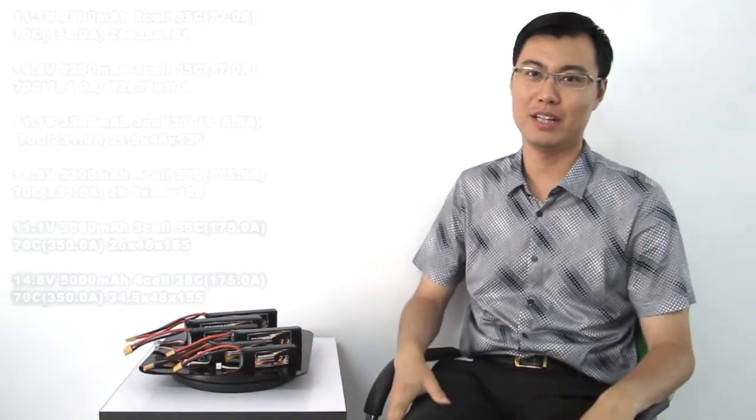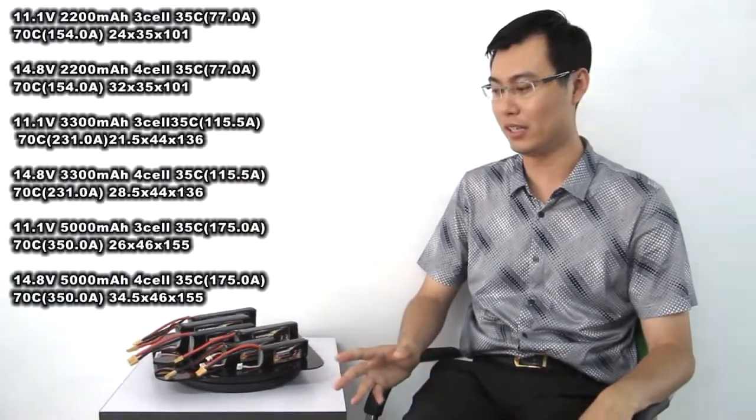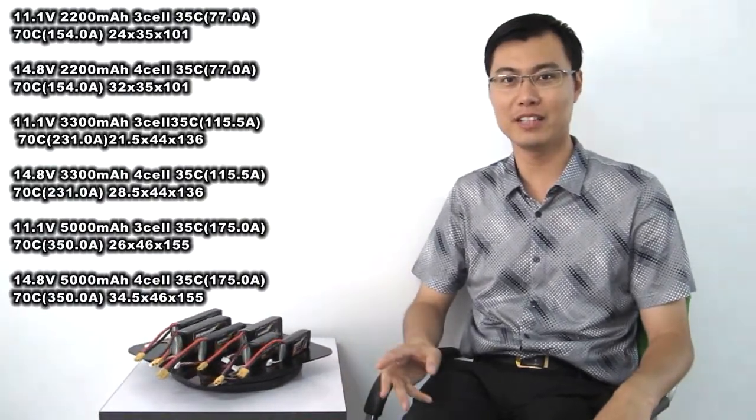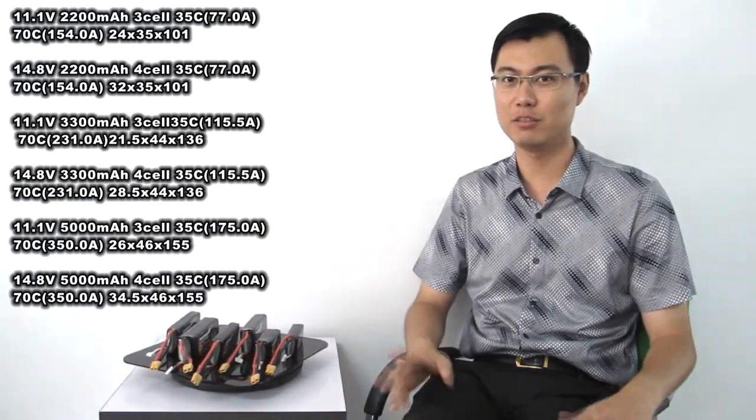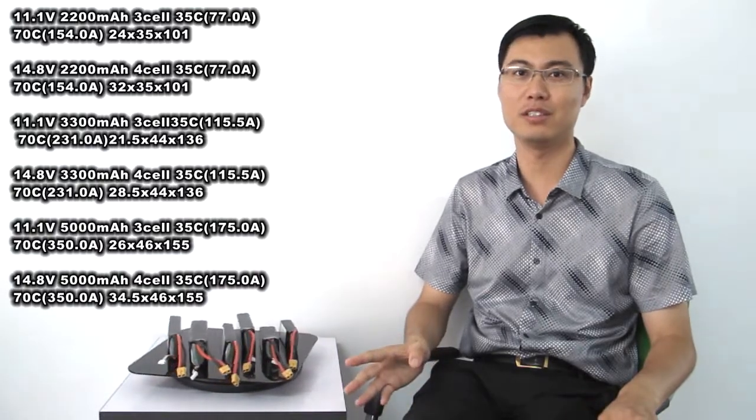On this table you can see 6 type batteries from 2200mAh to 5000mAh. You can see we made two main types, 3S type and 4S type, suitable for almost all the multi-rotor products.